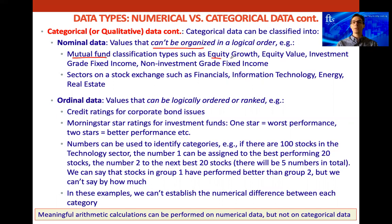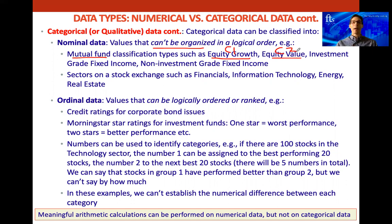We can call equity growth funds category one and equity value funds category two. Under fixed income, we can get investment grade fixed income as category three and non-investment grade fixed income as category four. All equity growth funds go into category one, equity value funds into category two, investment grade fixed income into category three, and so on. Of course, we get many more classifications — real estate funds and many other types which we'll talk about as we go through the curriculum.